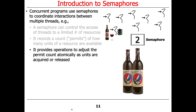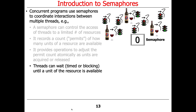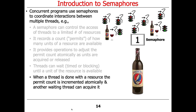Let's say one thread comes along and wants a glass of Grateful Dead wine. They get the bottle, and that decrements the semaphore count by one. Then another thread comes along and gets a bottle, and the count goes down to one — meaning there's one bottle left. A third thread comes along and gets the third bottle, so we've got three threads each holding a bottle. Any other threads that want a bottle are just going to have to wait until someone else is done and puts it back. When a thread is done with the resource, it gives it back and the semaphore count increases by one, meaning someone else can come along and grab it.